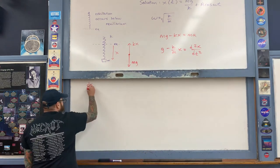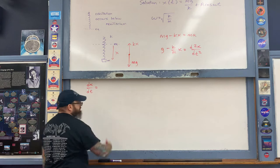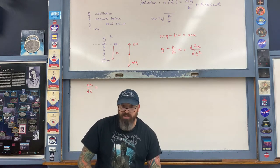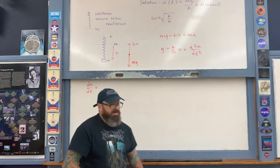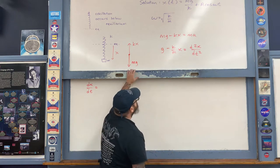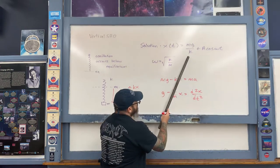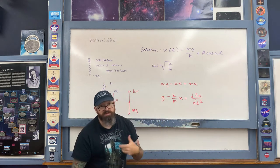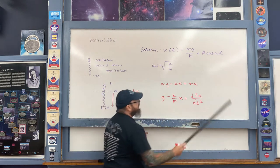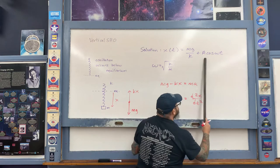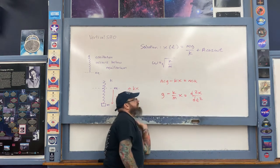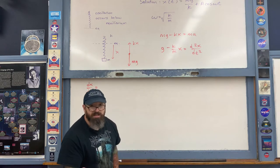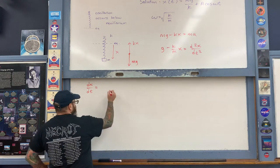The first derivative of position with respect to time — that's the velocity — is the same thing as it is for the horizontal case. The reason for that is because the quantity mg over k is a constant. So when I differentiate, that term equals zero, and I'm just taking the derivative of the cosine term with respect to time. That's the same as our velocity equation for the horizontal case from earlier in this unit.